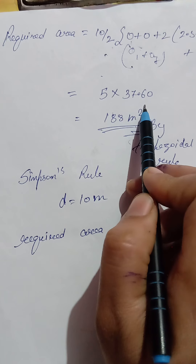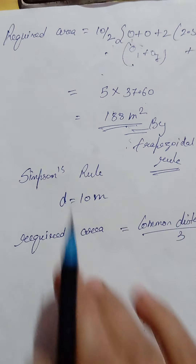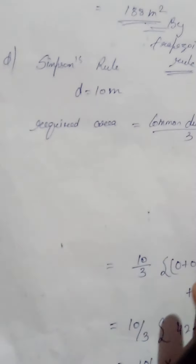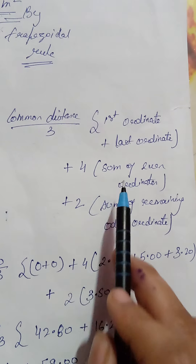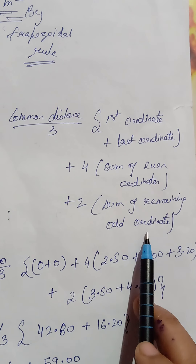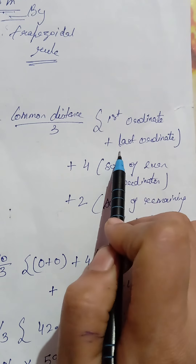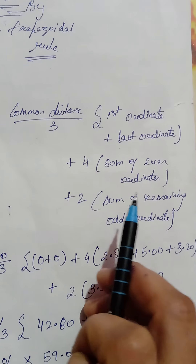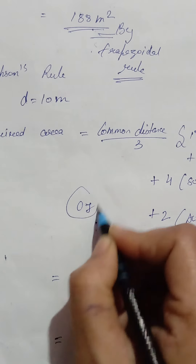The required area is common distance by 2, into first plus last ordinate plus twice of all other ordinates. The first ordinate O1 is 0 and the last ordinate O7 is also 0 — as you can see from the figure — so O1 plus O7 equals 0. With 10 by 2 giving 5, and the sum of all intermediate ordinates being 37.60, we get 188 square meters by the trapezoidal rule.